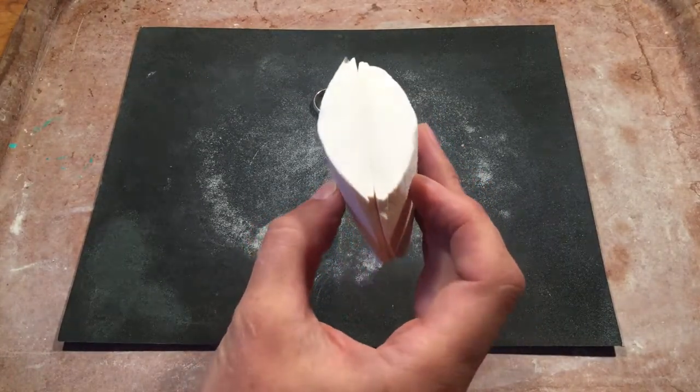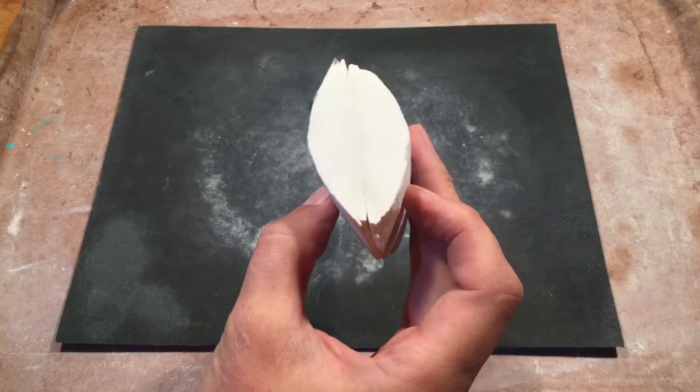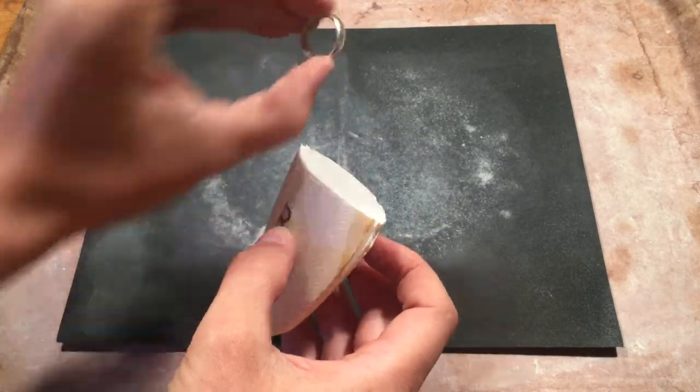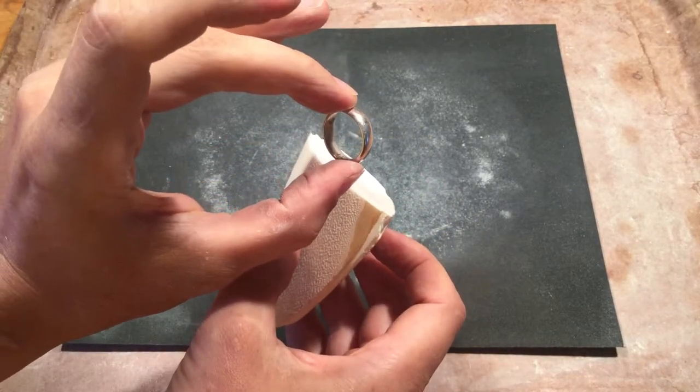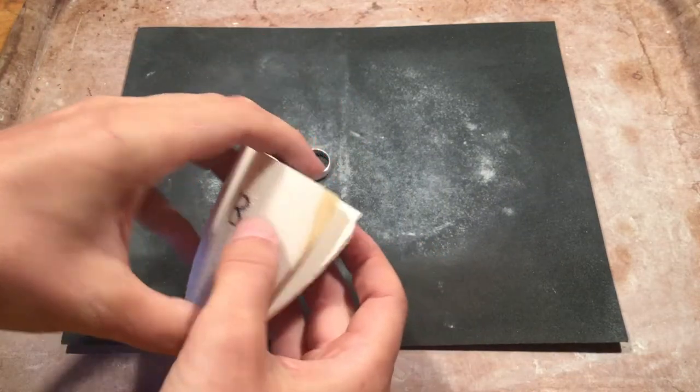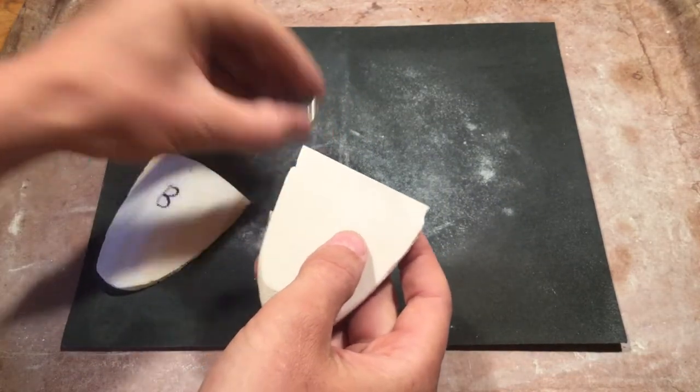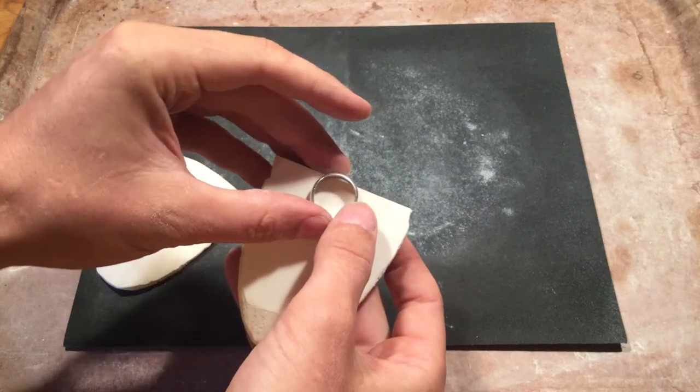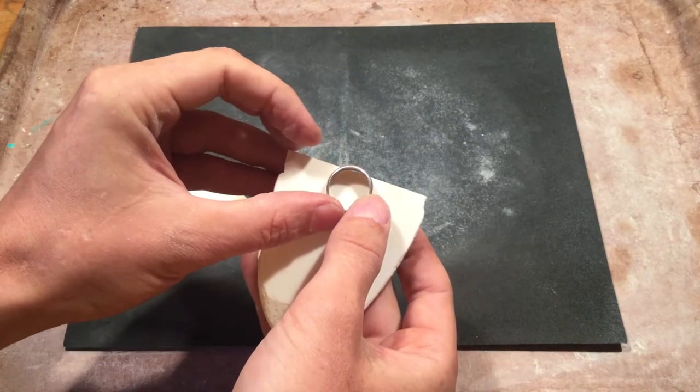That allows us to add a secondary component to the top because we're going to embed a band ring into our master mold.